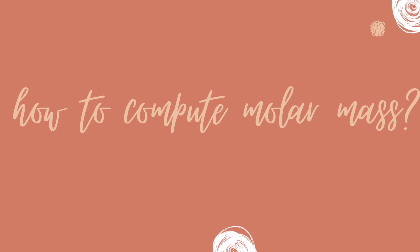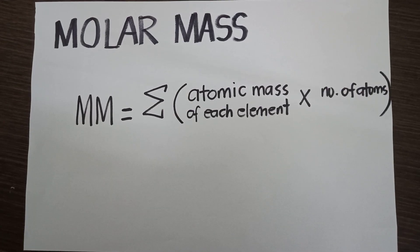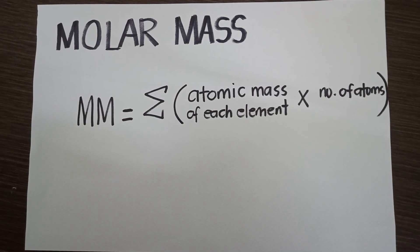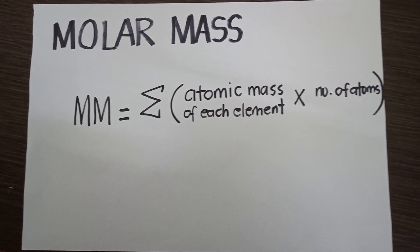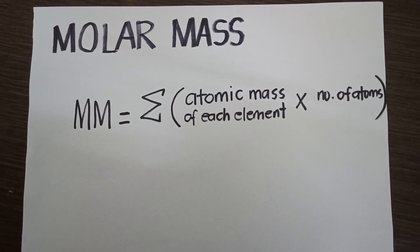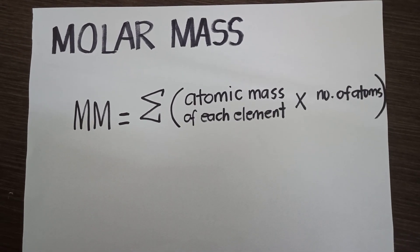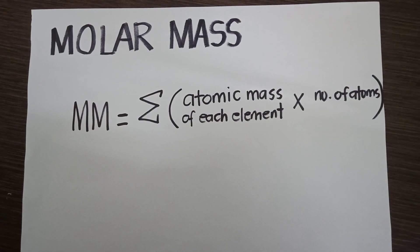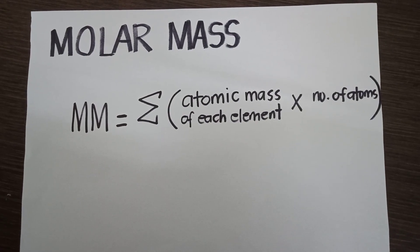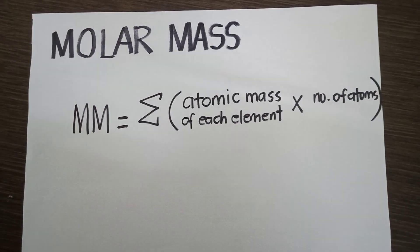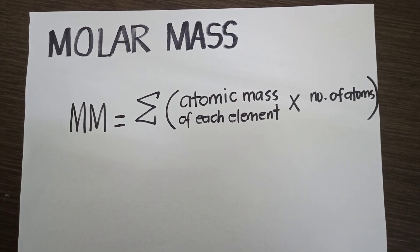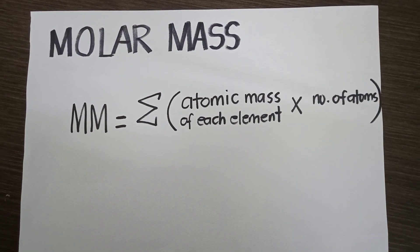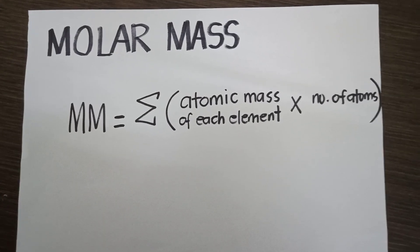Now let's find out how to compute for molar mass. The formula is: molar mass equals the summation of the product of the atomic mass of each element and the number of atoms of that element in the compound.